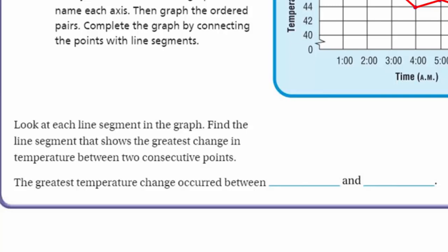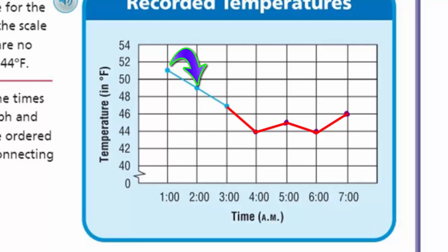Now look at each line segment to find the one showing the greatest change in temperature between two consecutive points. The greatest temperature change occurred between blank and blank. Consecutive means in a row — next to each other — so we compare one to two, two to three, and so forth. From one to two: 51 down to 49 is two degrees. From two to three: 49 to 47 is two degrees.